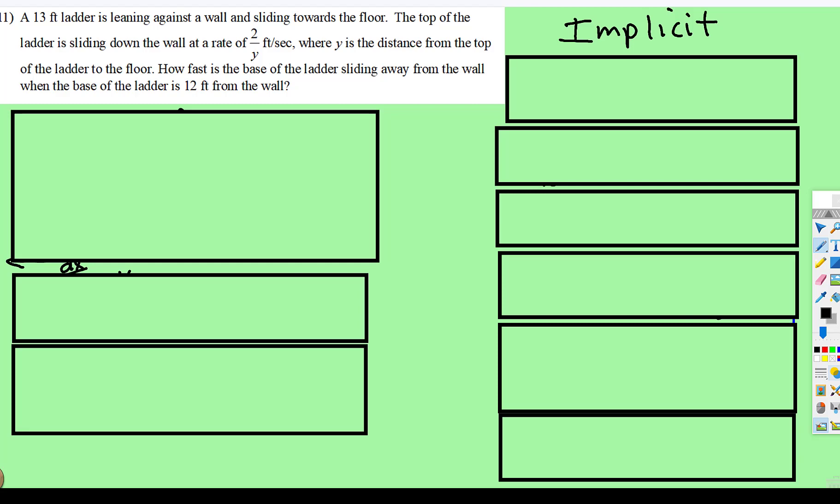Okay, one more related rate problem. You have a 13-foot ladder leaning against a wall, but it's sliding. The 13-foot ladder is slipping towards the floor. The top of the ladder is sliding down at a rate of 2 over y feet per second, where y is the distance from the top of the ladder to the floor.